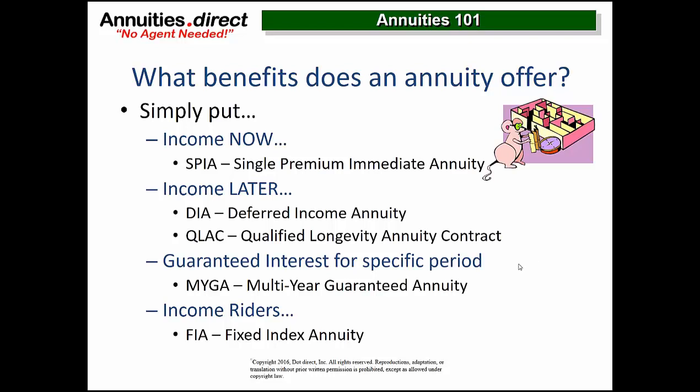Will Rogers said it best: he's more interested in the return of his principal than the return on his principal. Determine first what you want and how to get it. Sometimes you just can't get there from here — if you say you want market growth, have a nice day, come back when you want guarantees. If you ask agents for market growth, they'll say they have it, but they don't. They have an indexed or variable annuity you're going to hate. If you're looking for market growth, don't buy an annuity.